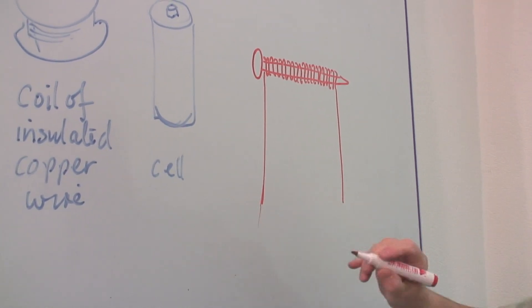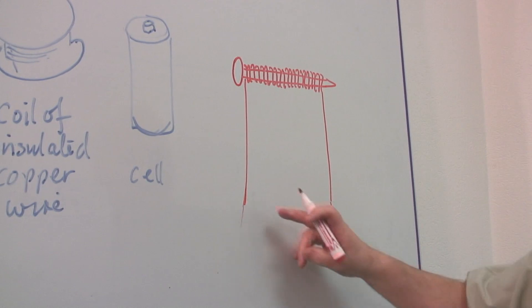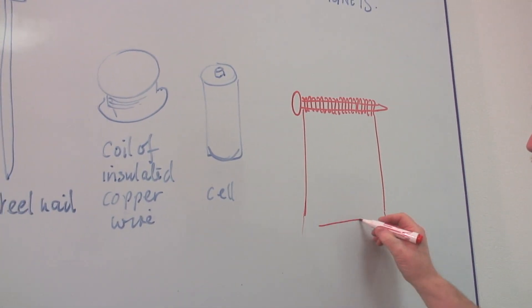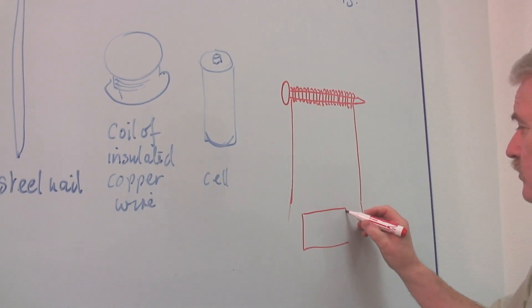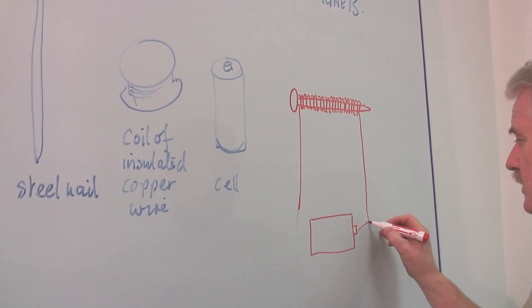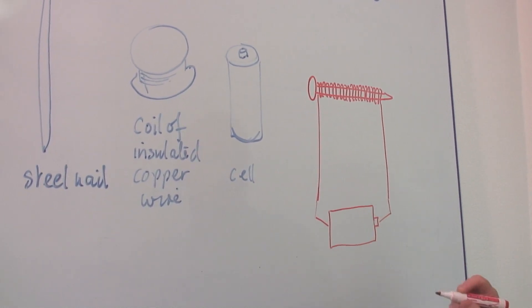You want the bare ends here. That is, take the insulation off. And that is what you're going to attach to the cell. You simply put it straight across the cell. So it goes from there to there.